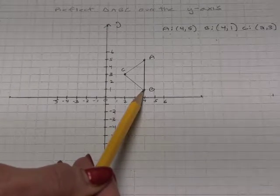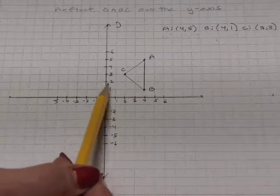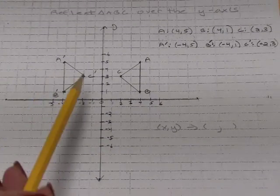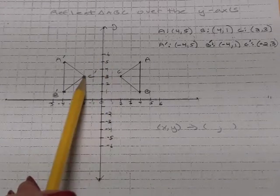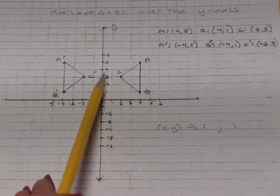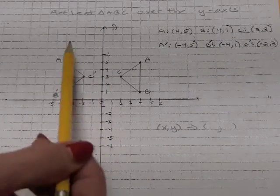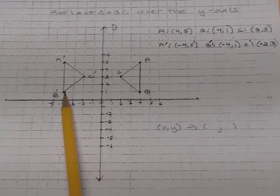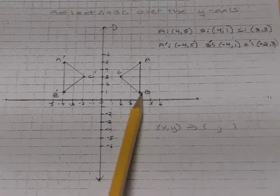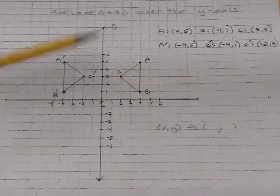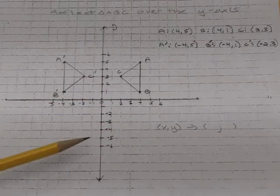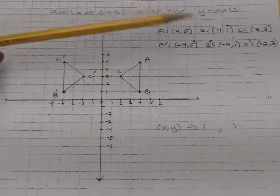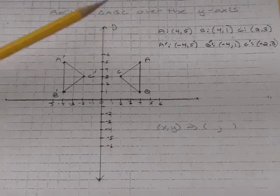B is four units to the right of the Y-axis, and B prime will be four units to the left. Here is the actual reflection. C prime is the same distance away from the Y-axis as C is. A prime is the same distance away from the Y-axis as A is, and B prime is the same distance from the Y-axis as B is. So it's really the X coordinates that are the only thing that's changing.